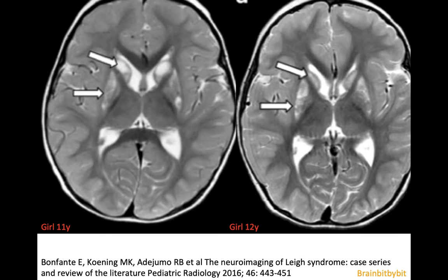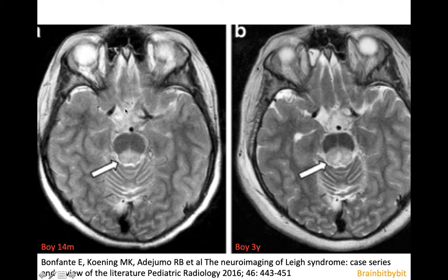In Leigh syndrome, there is involvement of gray matter structures, mainly the striatum, but sometimes also the pallidum and thalamus. In the brainstem, there is typically involvement of the periaqueductal gray matter, the dorsal pons, and the cerebellar nuclei.